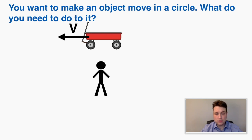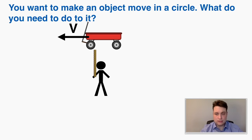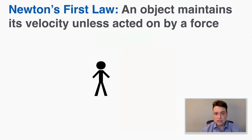To make the cart move in a circle as it goes by you, you'd have to apply a constant net force toward the center of the circle. That would cause the cart to move in a circle. This is based on Newton's first law: an object maintains its velocity unless acted on by a force.